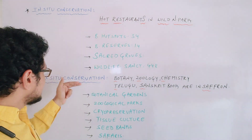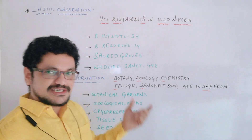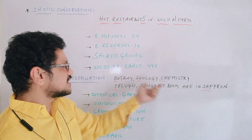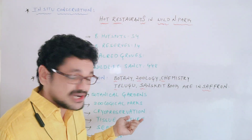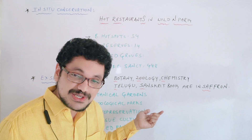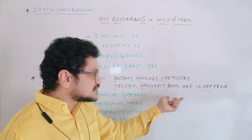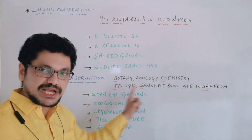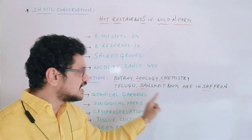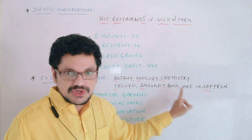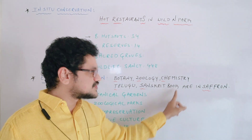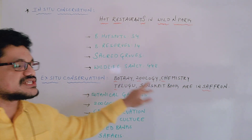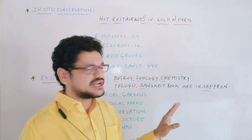Let us move to ex-situ conservation. Here is a simple mnemonic: 'Botany, zoology, chemistry, Telugu, Sanskrit — books are in saffron.' Botany, zoology, chemistry, Telugu, Sanskrit books are in saffron.